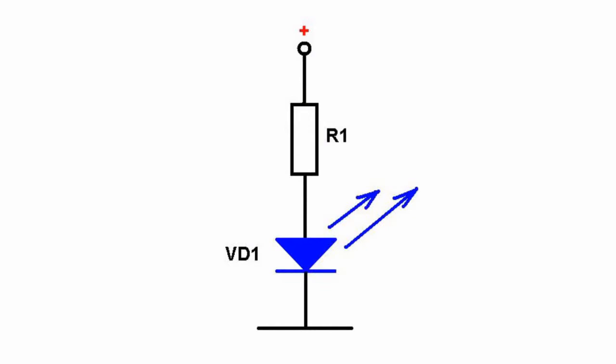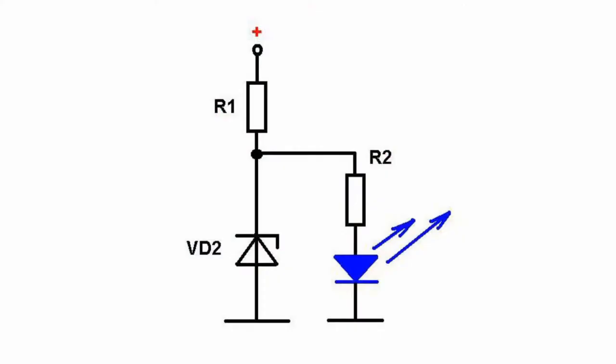Power supply voltage oscillations change the current flowing through an LED. That's why power supply voltage should be regulated. In some cases you will need a simple parametric stabilizer with a zener diode where resistor R1 is used as a ballast.